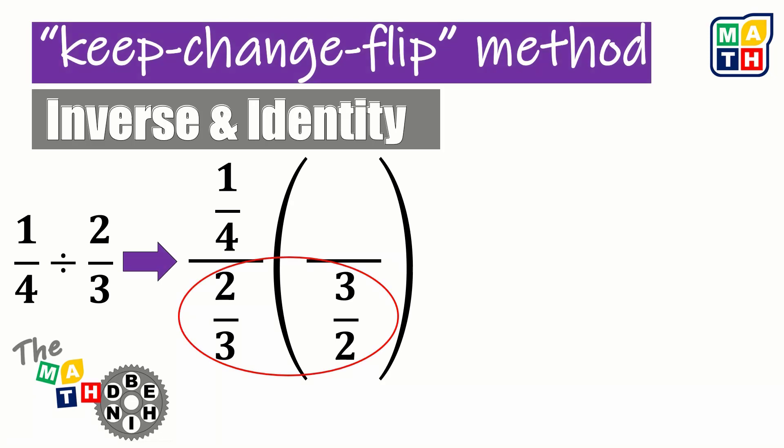Now, the denominators represent the inverse property of the other. 2 thirds is the inverse property of 3 halves, and 3 halves is the inverse property of 2 thirds under multiplication.